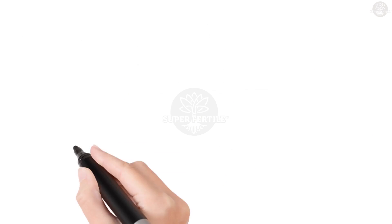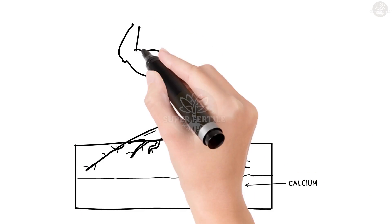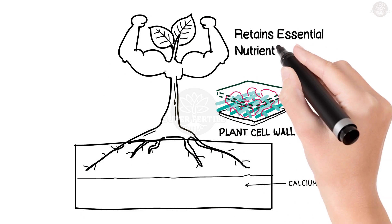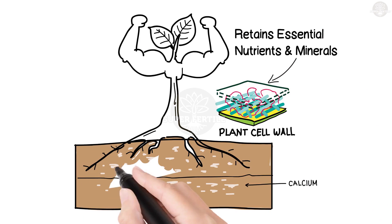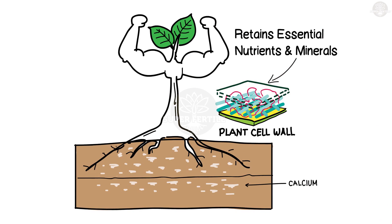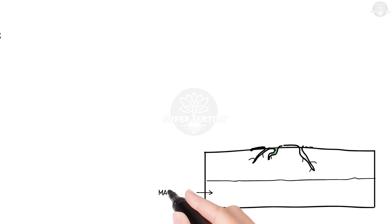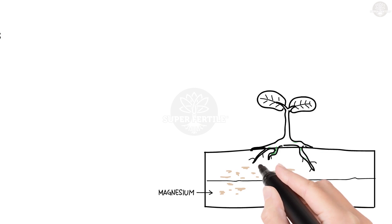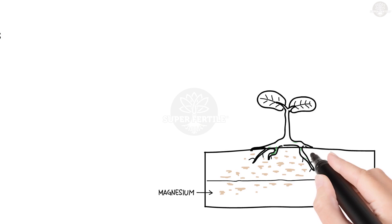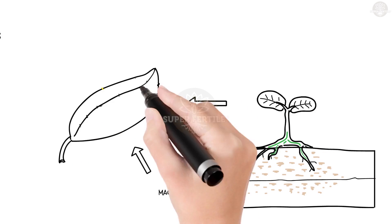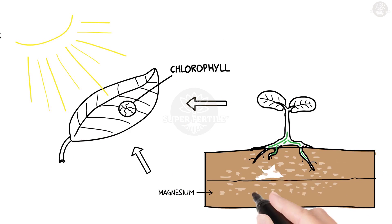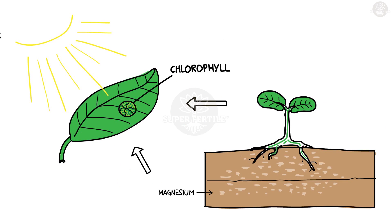Dolomite contains calcium, which helps plant cells absorb and retain essential minerals and nutrients and makes the plants stronger. It also contains magnesium, which is part of the chlorophyll in all green plants and essential for photosynthesis. Magnesium also helps activate plant enzymes needed for healthy growth.